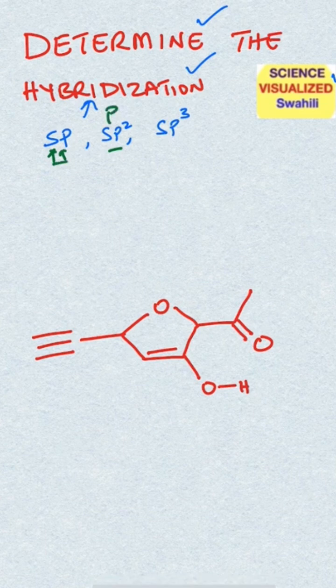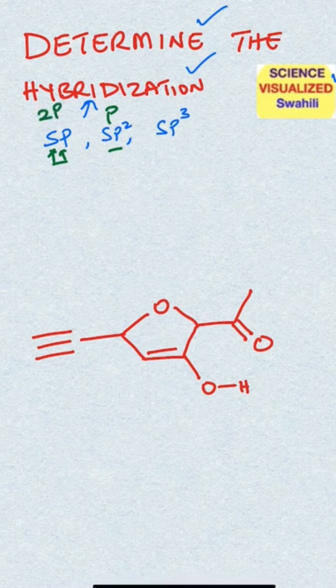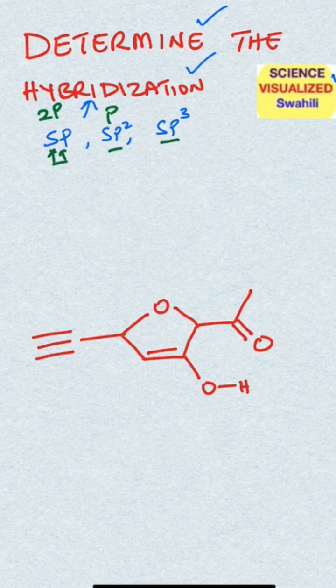In sp, there are two p's that are not used, while in sp3 we use all the p orbitals, px, py, and pz, and the s.